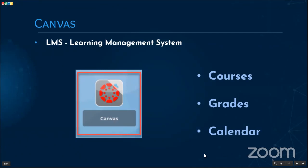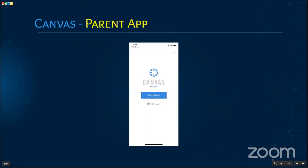As a parent, you too have access to Canvas. You will have access to your students' courses, grades, and calendars. You do not have access to their discussions, assignments, or quizzes. To see all this within Canvas, you need to download the Canvas parent app on your iOS or Android device. There are three Canvas apps — a teacher app, a student app, and a parent app. Make sure you're downloading the correct parent app, which is blue.